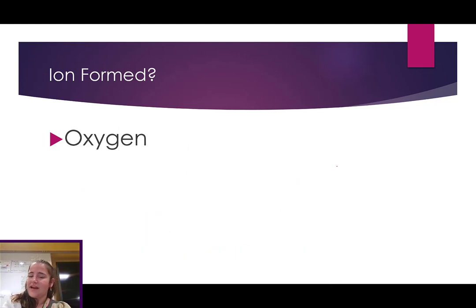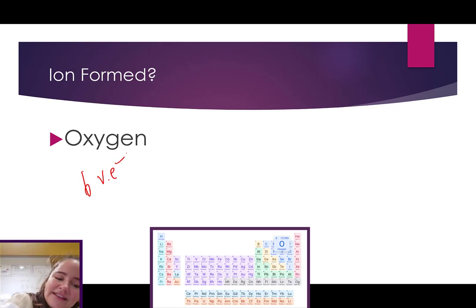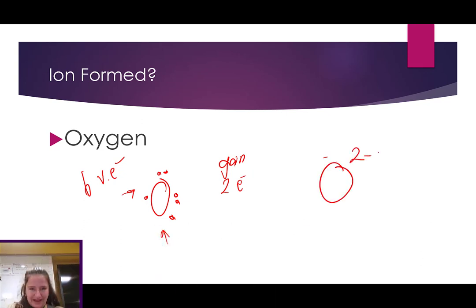And what about oxygen? Oxygen is in group 16 on the periodic table. It's got six valence electrons. One, two, three, four, five, six. So, to fill it up, it needs two more. So, it will gain two electrons and become an O2-.